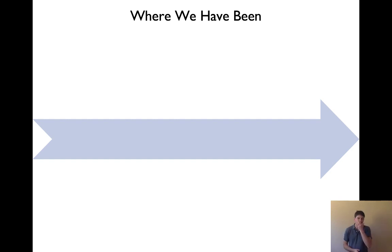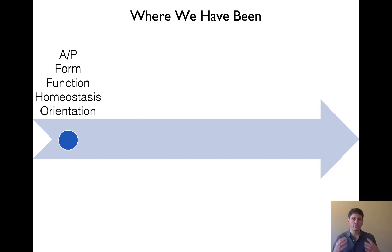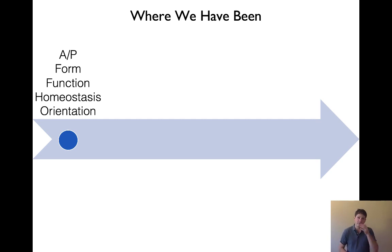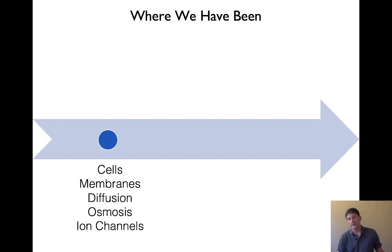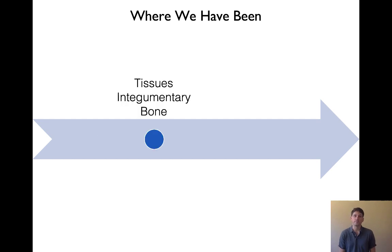So where have we been? We started with unit one and looked at anatomy and physiology — the importance of form and function, homeostasis, and different types of orientation in our body, different regions, different terminology to help us orient ourselves. Then we went into cells and membranes, diffusion, ion channels, and osmosis. Then we talked about tissues, our integumentary system, and bone.